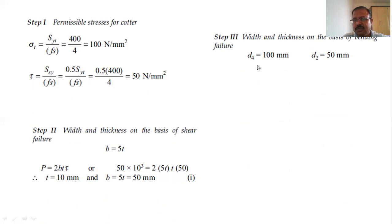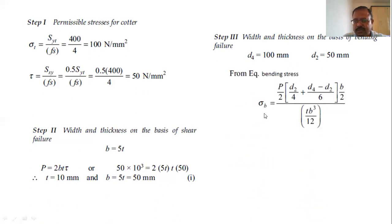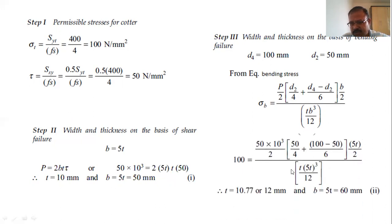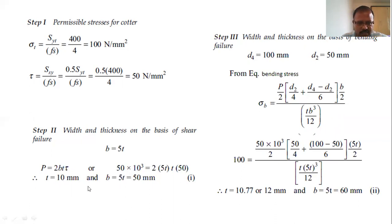For the second criterion — bending: using the bending stress equation with d4 = 100 mm and d2 = 50 mm from the design process, and substituting b = 5t, we solve for t = 12 mm and b = 60 mm. Summary of results: on the basis of shear failure, thickness = 10 mm and width = 50 mm; on the basis of bending, thickness = 12 mm and width = 60 mm.